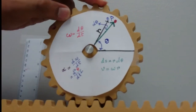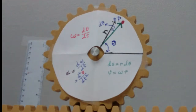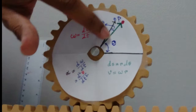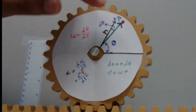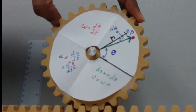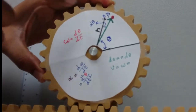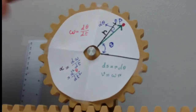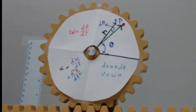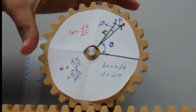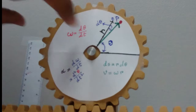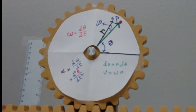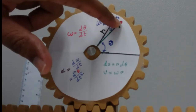Now let's talk about the motion of point P. So far we've discussed the motion of the radial line r, the green line. Point P will have a circular path — it does not have angular velocity or angular motion; it has circular path motion. To define the position of P, we need the vector r and the angle theta.